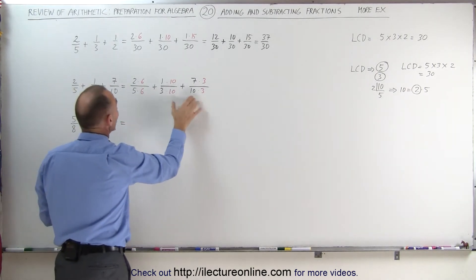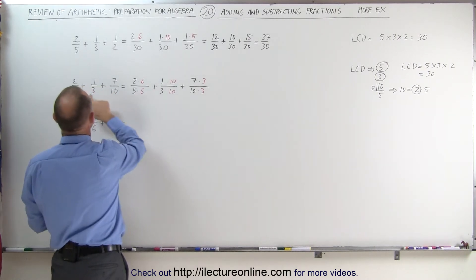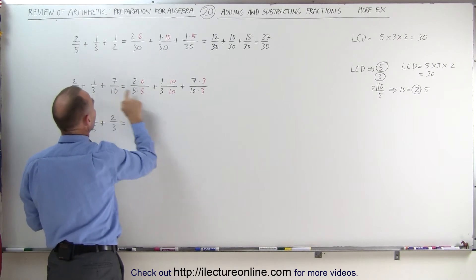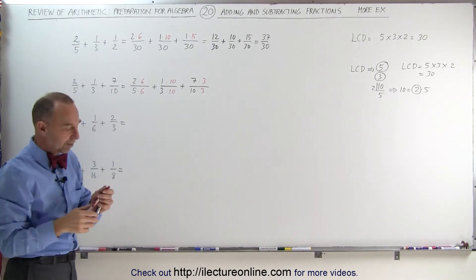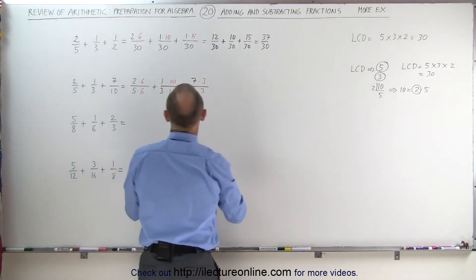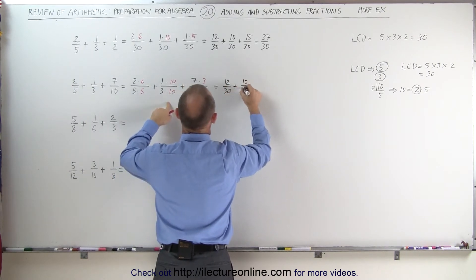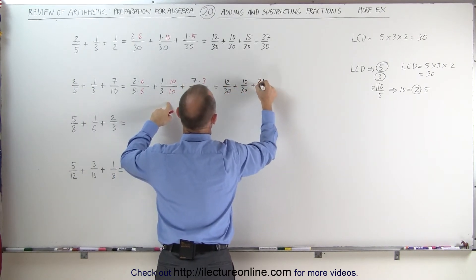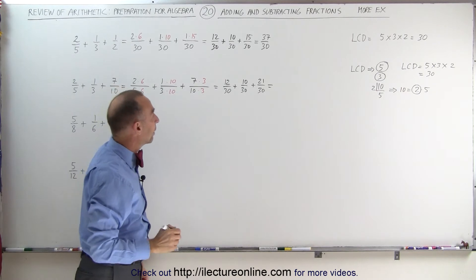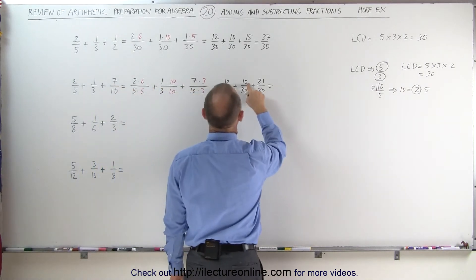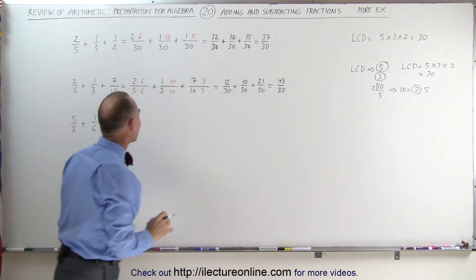I have to get every fraction with the same lowest common denominator, which is 30. I have to multiply the first one by 6, the second one by 10, and the third one by 3 to get 30 in the denominator. But of course we must do exactly the same to the numerator, which means we get 12 over 30 plus 10 over 30 plus 21 over 30. Now that all the fractions have the same denominator, 12 plus 10 is 22, plus 21 is 43 over 30.